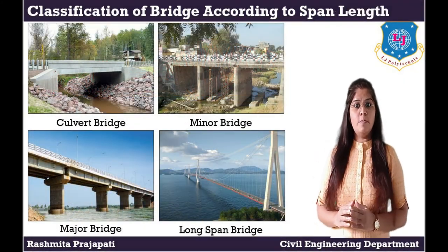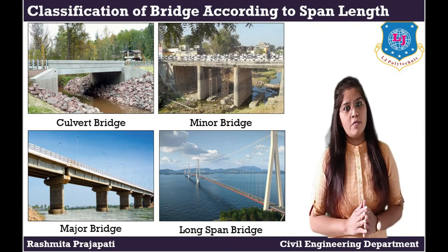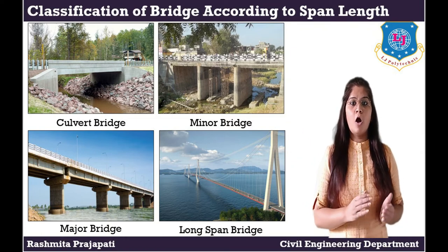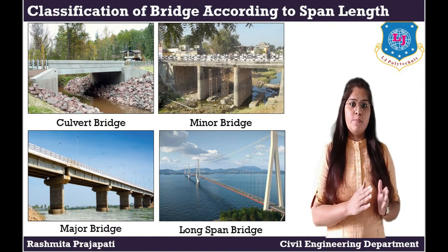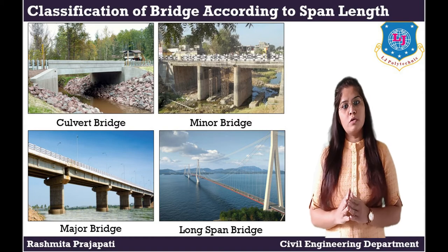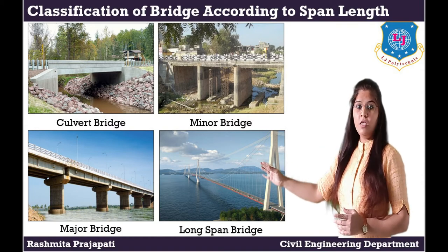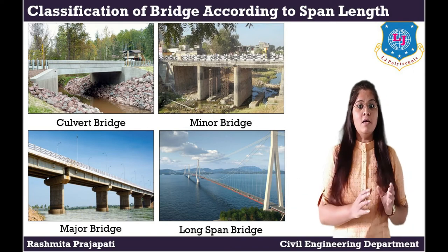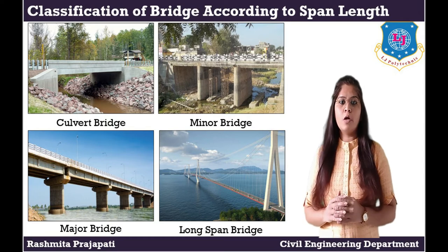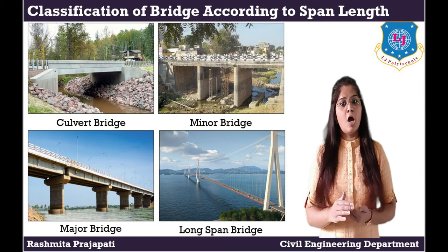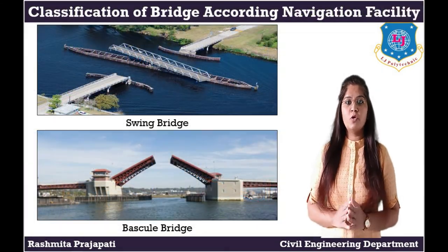Classification of bridge according to span length. Culvert: when the bridge span length is up to 8 metres, it is called a culvert. Minor bridge: span length of 8 to 30 metres is known as a minor bridge. Major bridge: in a major bridge, span is 30 to 120 metres. Long span bridge: a span above 120 metres is known as a long span bridge.